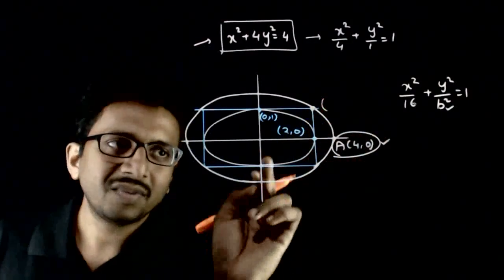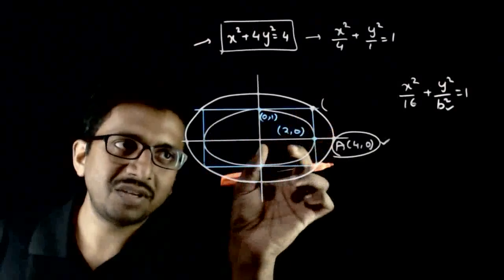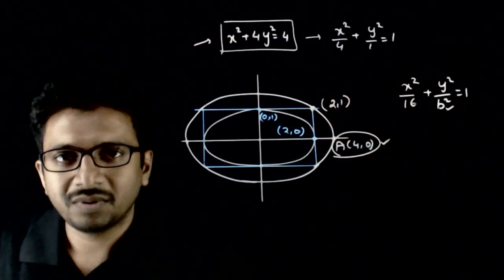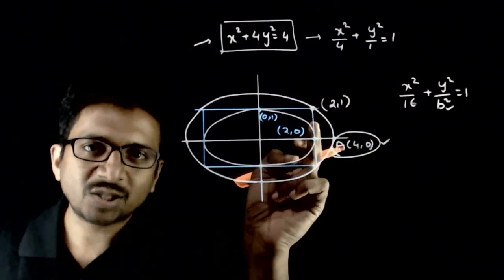So what is this point? Obviously, this point from observation, can you see that this point is (2,1). This point is (2,1). That means this ellipse has to pass through (2,1).